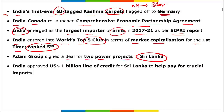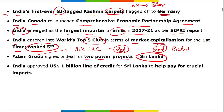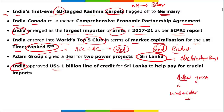Adani Group signed a deal for two power projects in Sri Lanka, and recently acquired ACC and Ambuja Cements, becoming the second-largest cement company. Adani became the second richest person in the world, just after Elon Musk. Adani Group will provide electricity to Bangladesh, and Adani Green was the first organization to launch a joint project of both wind and solar energy. India approved a 1 billion dollar line of credit for Sri Lanka.